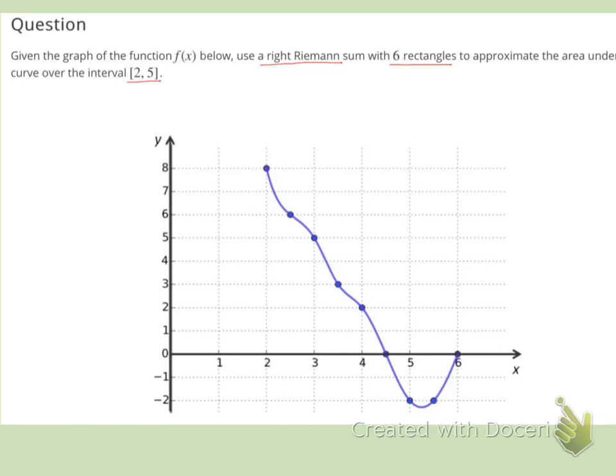So we're going from two to five, and we need six rectangles. If we go every half unit—so from two to two and a half, two and a half to three, three to three and a half, four to four and a half to five—we'll have six rectangles.